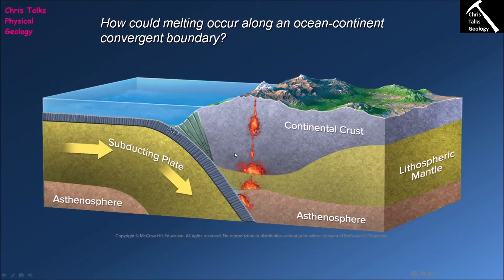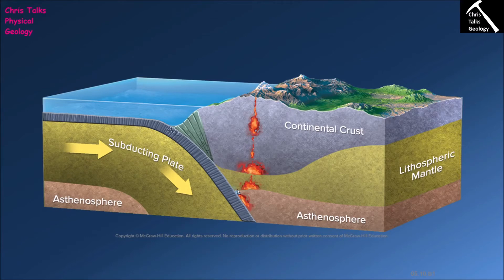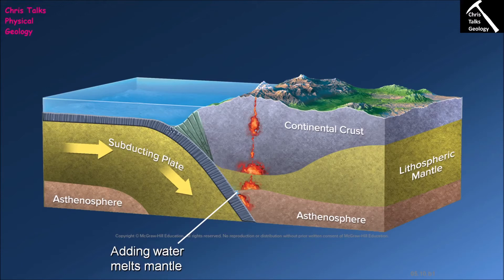At ocean-continent convergent plate boundaries the basic situation is the same: oceanic crust subducts to about 150 kilometers, water leaves the minerals of the subducting crust, enters the mantle rocks, destabilizes them, and causes flux melting. Once again a mafic magma is produced and rises through the mantle to interact with the continental crust. However, just as with ocean-ocean boundaries, the magma erupted at the surface is not mafic — it will be either felsic or intermediate.